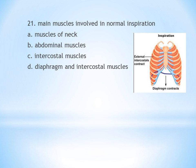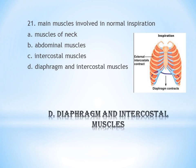Question 21: Muscles involved in normal inspiration. A. Muscles of neck. B. Abdominal muscles. C. Intercostal muscles. D. Diaphragm and intercostal muscles. Normal inspiration is helped by the diaphragm and intercostal muscles. The answer is D.